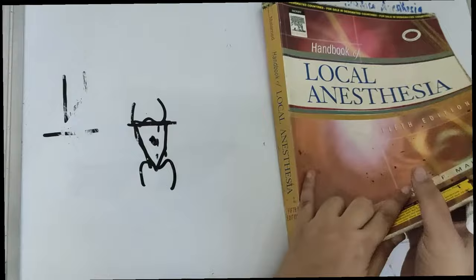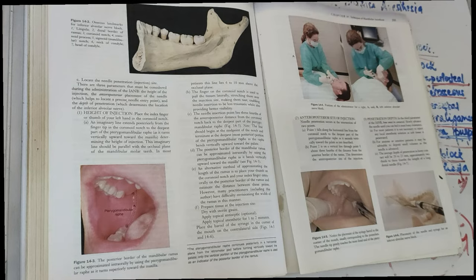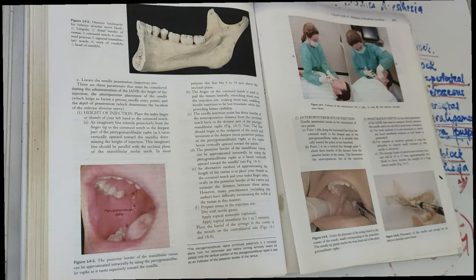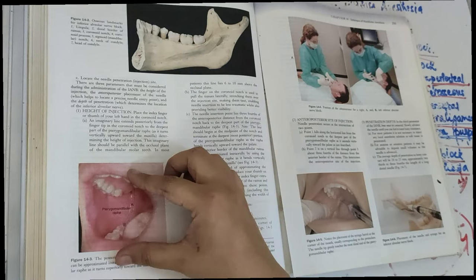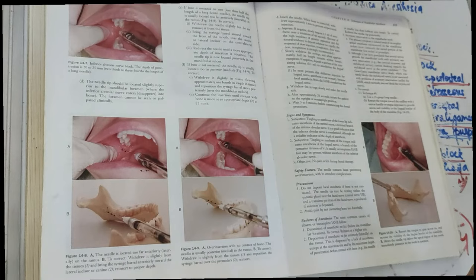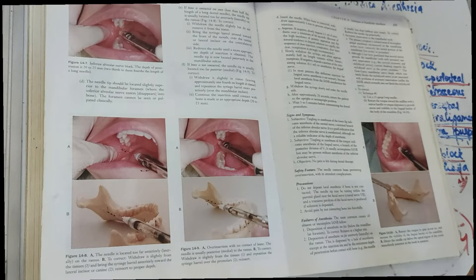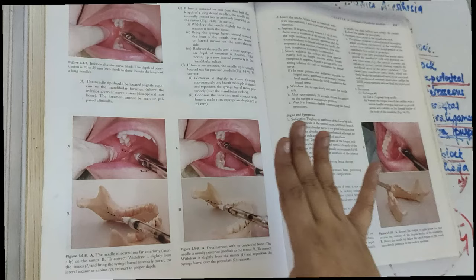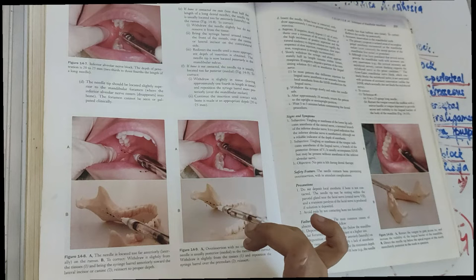The main concept of the inferior alveolar nerve block: palpate the coronoid process, place one finger in the coronoid process, ask the patient to open the mouth wide to see the pterygomandibular raphe, then place the needle deep inside, aspirate, and then give the inferior alveolar nerve block. It is very important to aspirate.